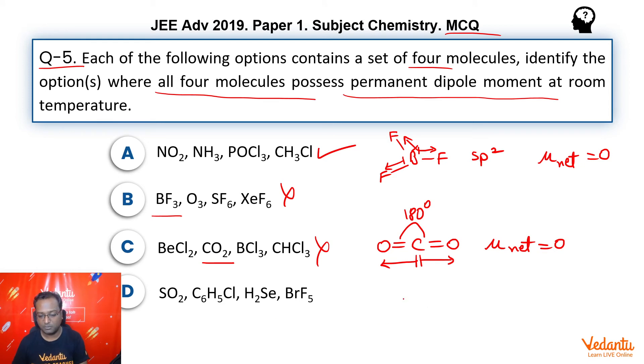Now, let's go ahead and check option D, SO2. SO2 is this angular molecule. Again, as you can see, mu net not equal to zero. If we talk about PHCl, that is chlorobenzene, mu net will again not be equal to zero because carbon-chlorine bond will have a very high dipole moment.